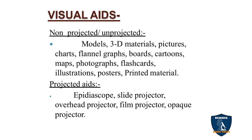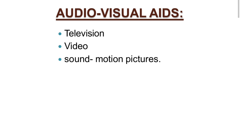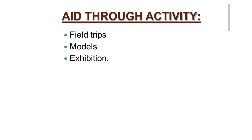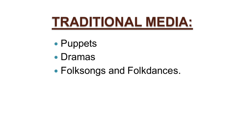Under projected aids you have: overhead projector, epidiascope, slide projector, film projector, and opaque projector. For example, with a slide projector you use slides that change one by one; with an overhead projector you use OHP sheets and write and present. Audio-Visual Aids — having both audio and video — include video, television, and sound motion pictures; your cinemas also come under sound motion pictures. Aids through Activity include field trips, models, and exhibitions. Traditional Media includes puppets, dramas, folk songs, and folk dances.